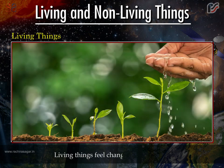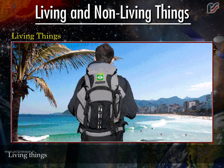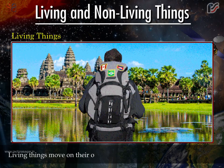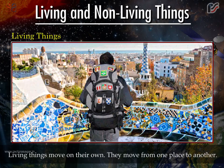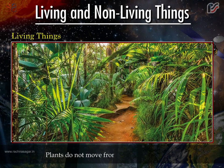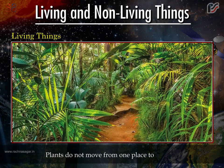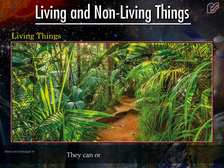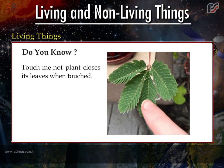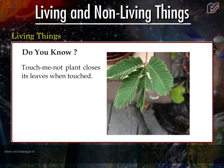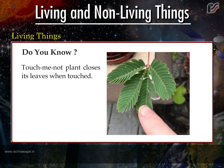Living things feel changes around them. Living things move on their own; they move from one place to another. Plants do not move from one place to another — they can only move their parts. Do you know? The touch-me-not plant closes its leaves when touched.